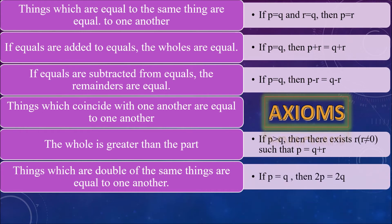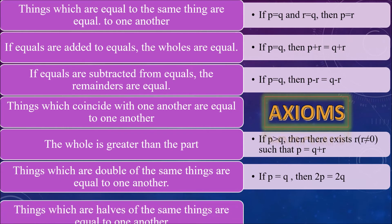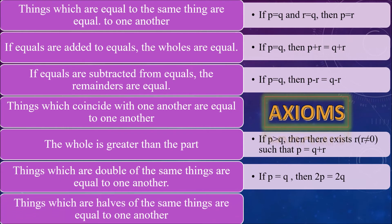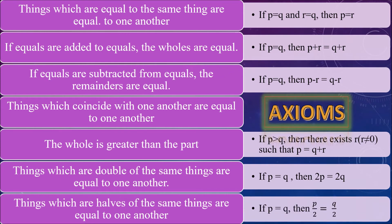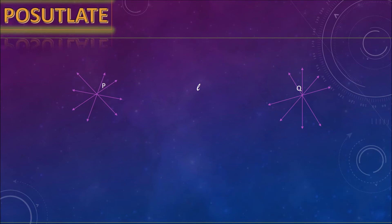That is, if p is equal to q, then double of p is equal to double of q. Seventh axiom is: things which are halves of the same things are equal to one another. That is, if p is equal to q, then half of p is equal to half of q.